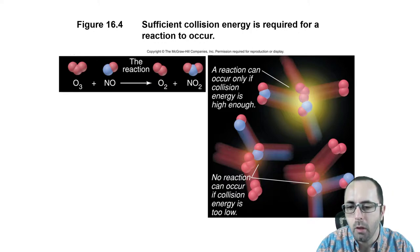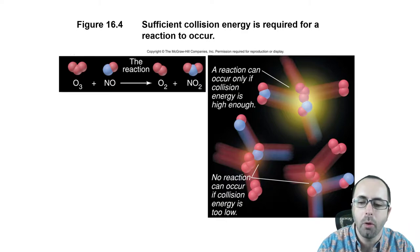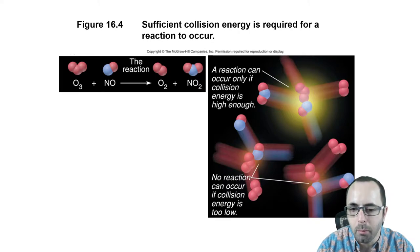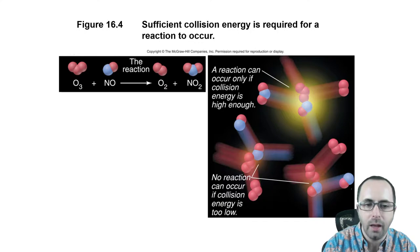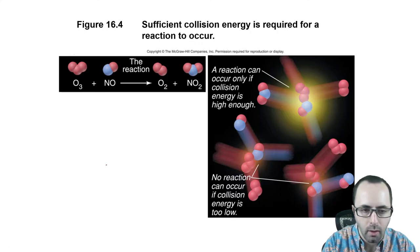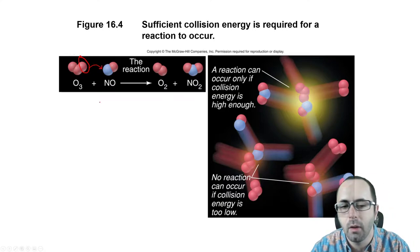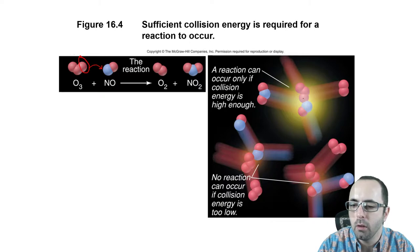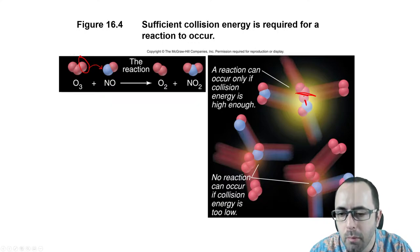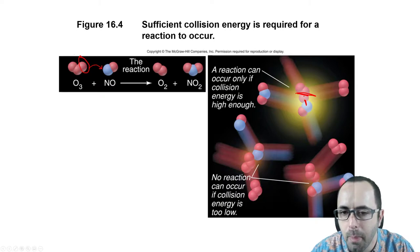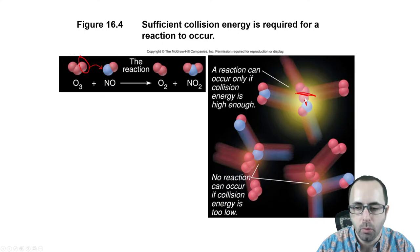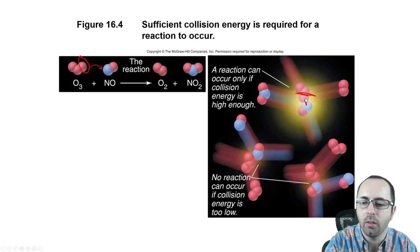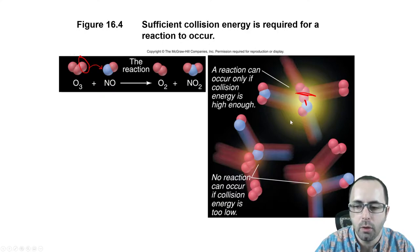For a reaction to happen, molecules must not only collide, but collide in the proper orientation and with enough energy so that old bonds can be broken and new ones can be made. In this reaction, an oxygen atom pops off the ozone (O3) and sticks to a nitrogen atom. You need a very energetic collision so that the O–O bond can be broken and a new O–N bond can form. This is why reactions happen much more quickly at higher temperatures — molecules move faster, so a greater fraction of collisions have sufficient energy.